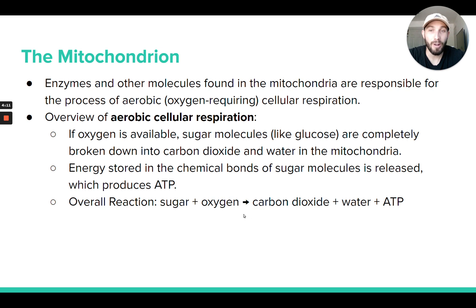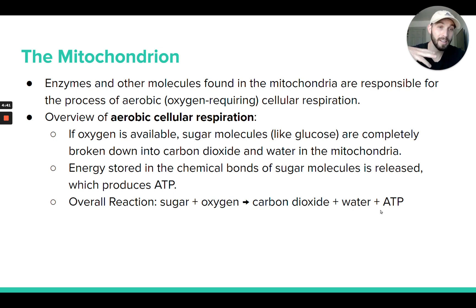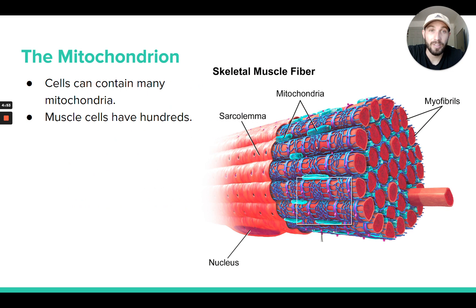Here's the overall reaction for cellular respiration. In cellular respiration, sugar molecules like glucose — C6H12O6 — are used together with oxygen (O2) inside the mitochondria. Those reactants become carbon dioxide molecules and water molecules, and a bunch of ATP is produced in that process.